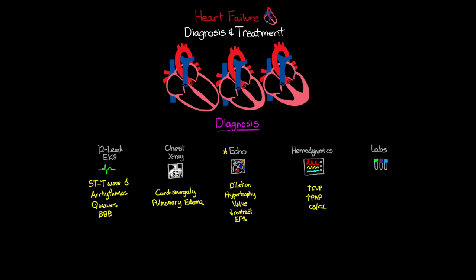The final diagnostic tool I want to focus on is BNP — the key lab value for heart failure. BNP is released by the heart as a result of stretch of the ventricles or a change in pressure inside the ventricles. When we have that stretch or pressure issue, as seen in heart failure, you're going to see an elevation of BNP. This has been a quick overview of the most common diagnostic tests available.